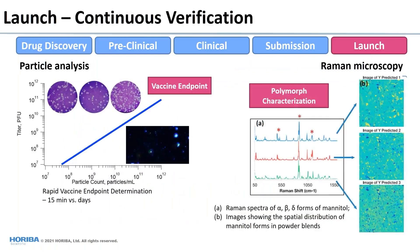You have continuous verification — particle characterization — you might continuously check that to make sure emulsions have the right droplet sizes. Or if you're doing a vaccine based on growing up a virus, you might use nanoparticle tracking analysis to get titers or as a substitute for measuring virus titers. Another application is Raman microscopy, where you can reassure yourself about polymorph characterization — are you getting the right forms of various materials?